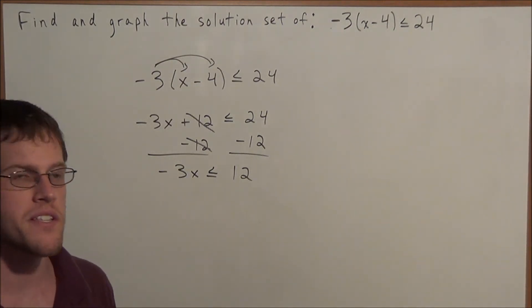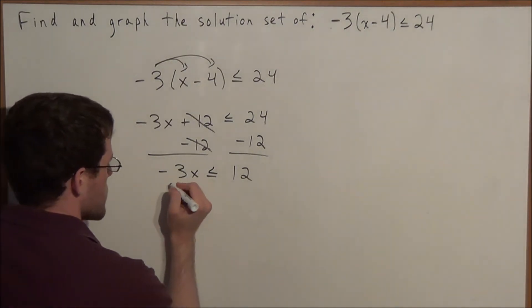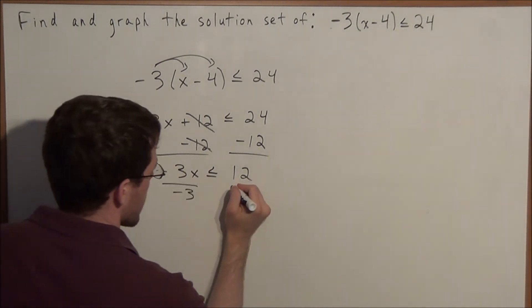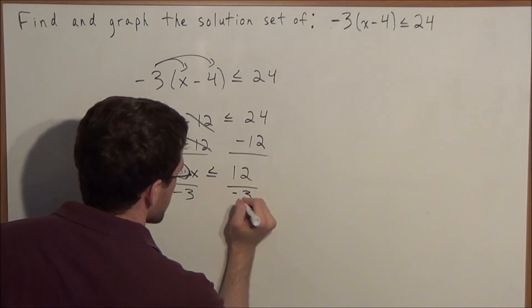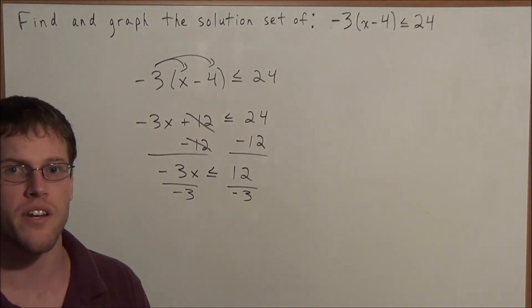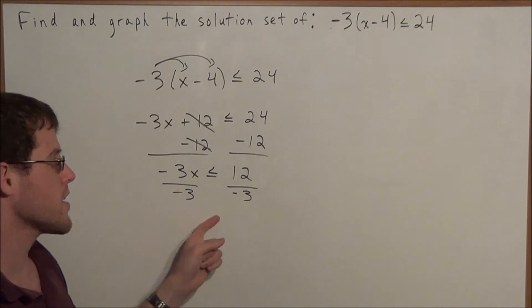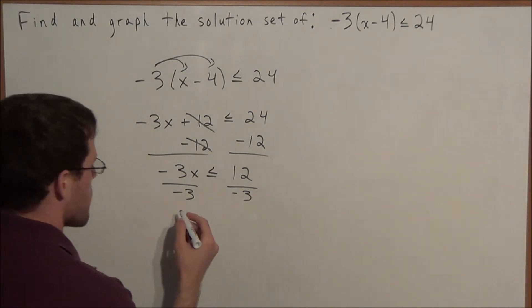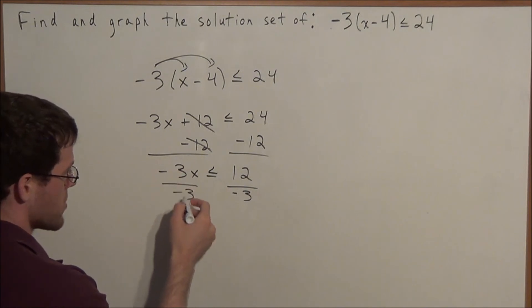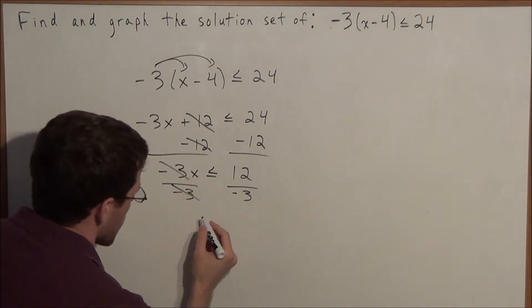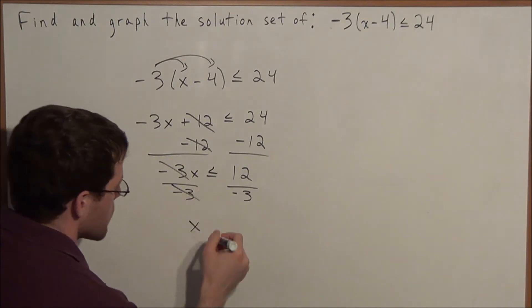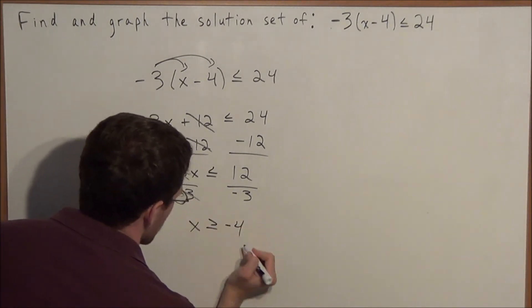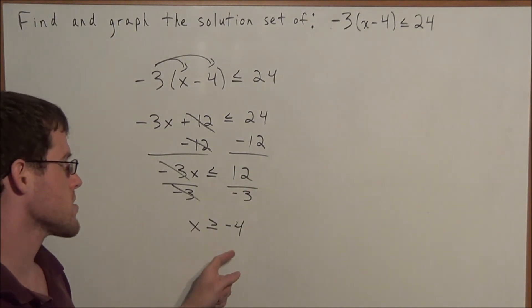But now this is the part where we need to be careful. We want to divide both sides by -3 to get this negative 3 in front of the x to cancel out. But this is an inequality. It doesn't behave like an equation in every aspect. When we divide by a negative, the sign of the inequality will flip. So -3 divided by -3 will cancel, and now we have x ≥ -4, because 12 divided by -3 is -4. But now why does that sign flip?